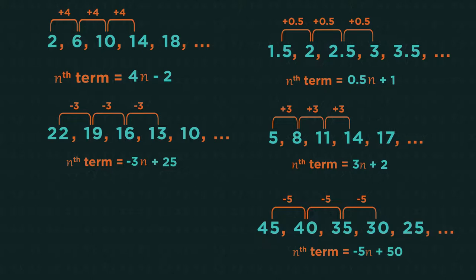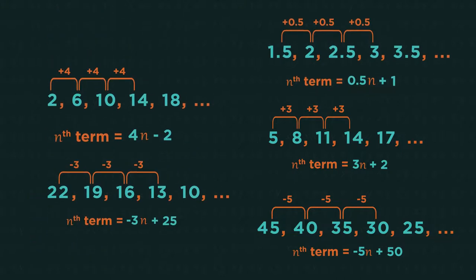Where do these come from? Pause the video and have a think. How do you go from 4 to 2? You have to subtract 2. From negative 3 to 22, you have to add 25.